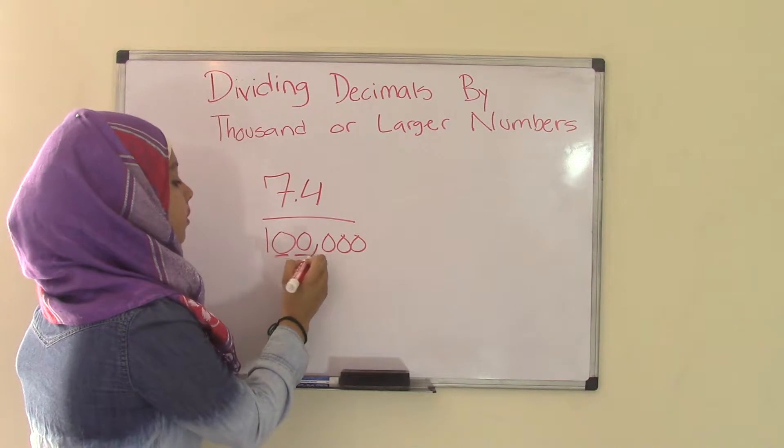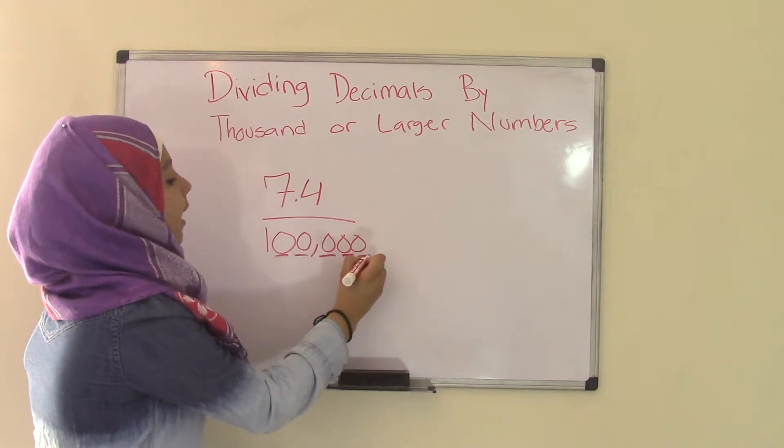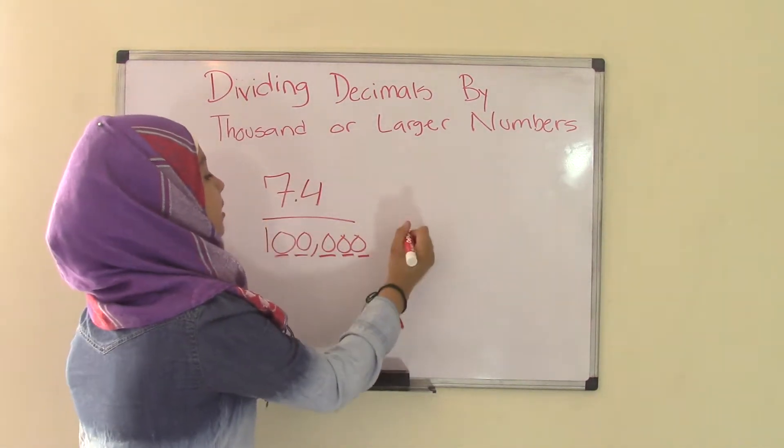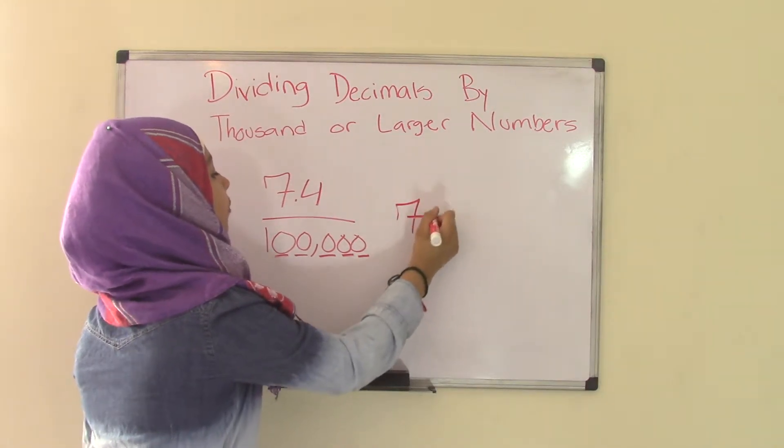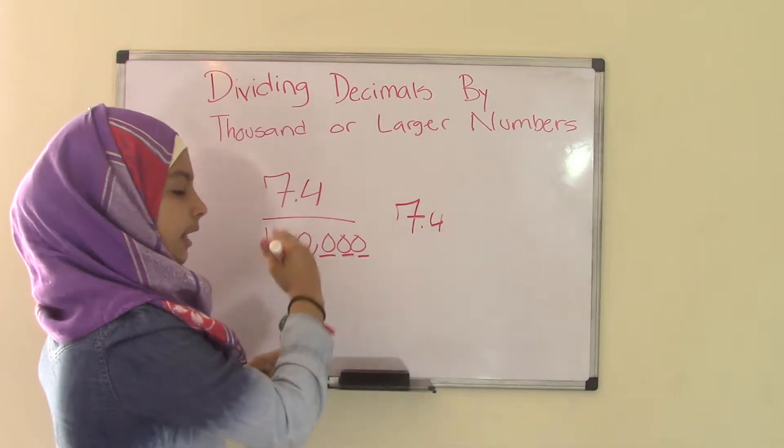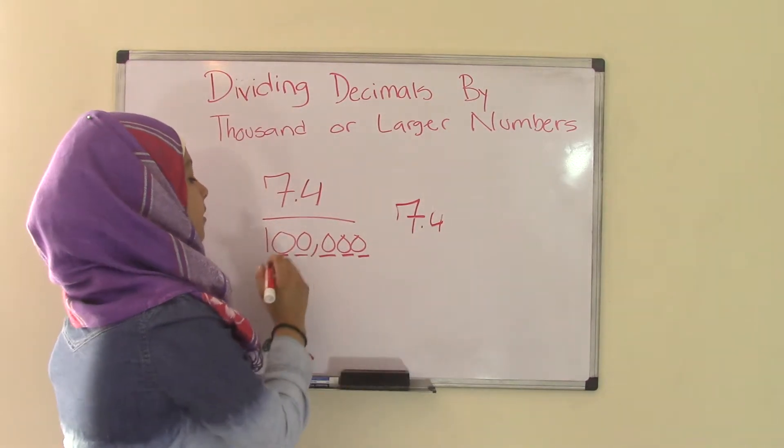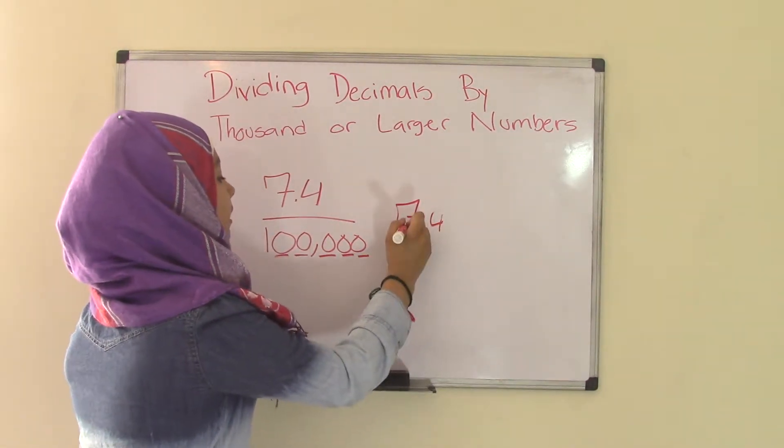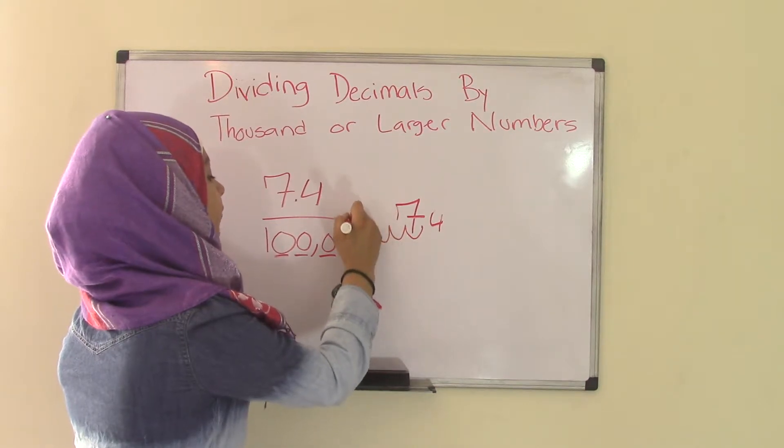That's 1, 2, 3, 4, 5. Five zeros. So you're going to rewrite this decimal number, 7.4. And you're going to move the decimal point from right to left because right to left decreases. So five spaces. 1, 2, 3, 4, 5.